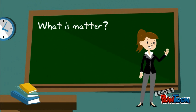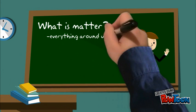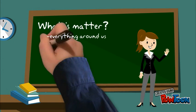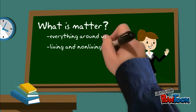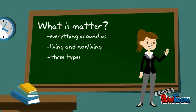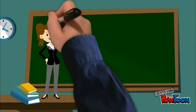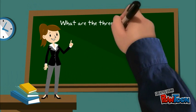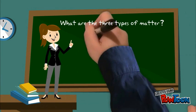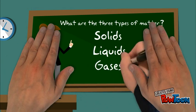So what is matter? Matter is everything around us. It's living and non-living, and there's three types. The three types of matter are solids, liquids, and gases.